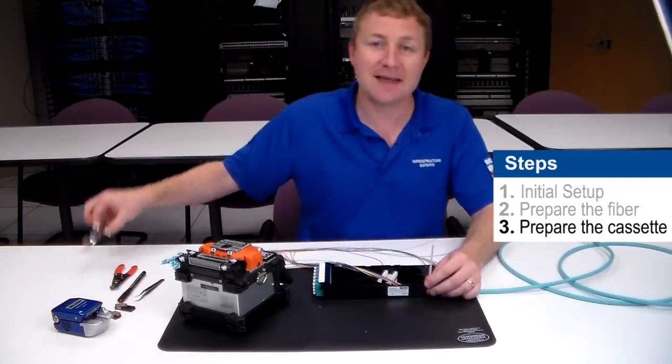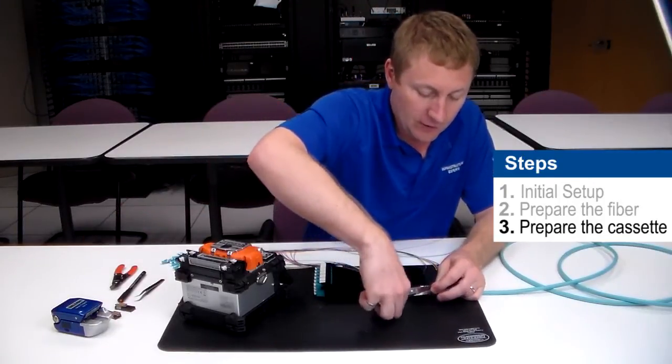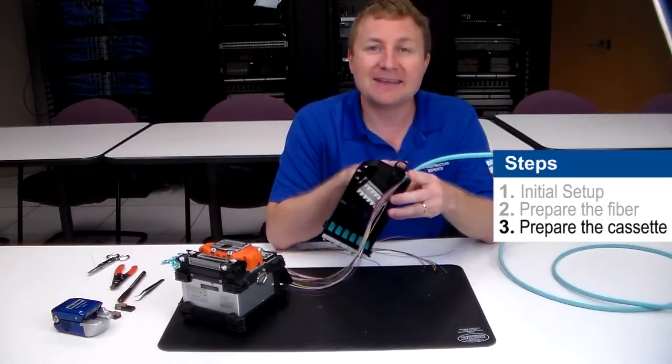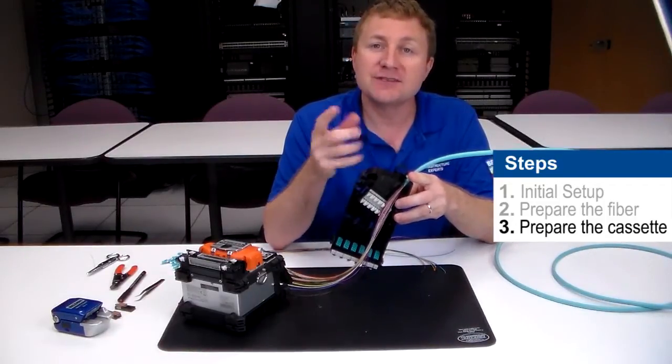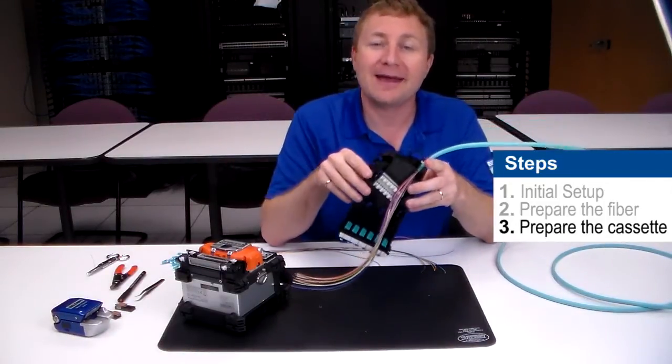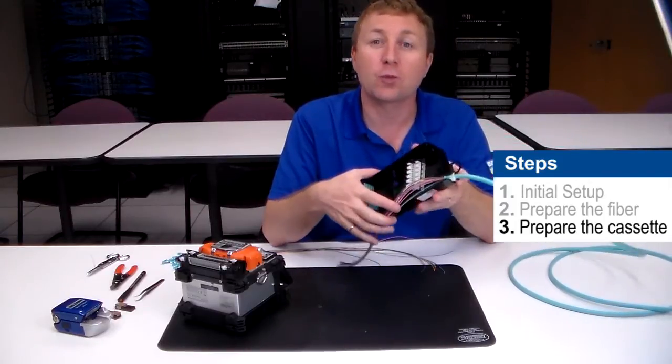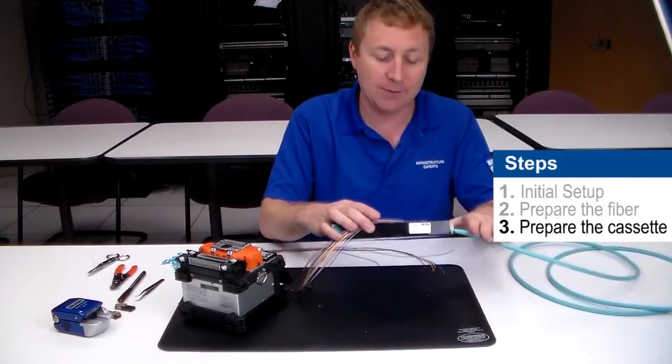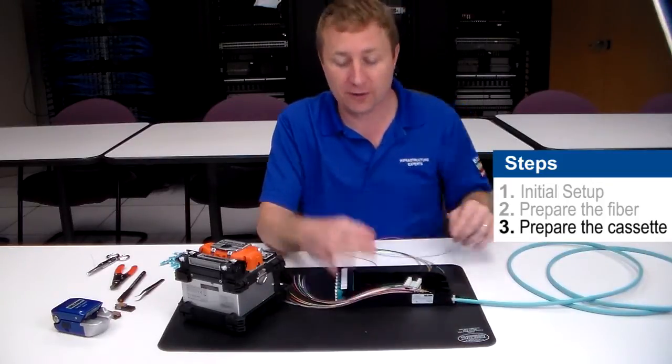What you're also going to notice on the back of the cassette is a d-ring, so you can use something like a bungee cord and hook it to the back of this d-ring and hang it off a patch panel if you're working in a rack or in a higher space. This will help keep the cable and the cassette secure while you're working with the splicer.